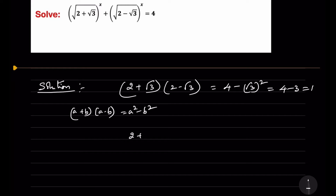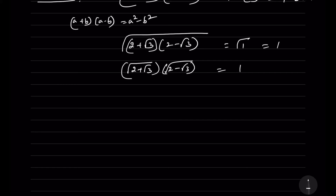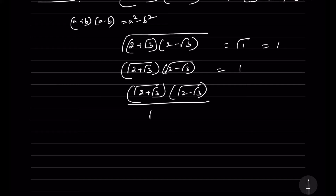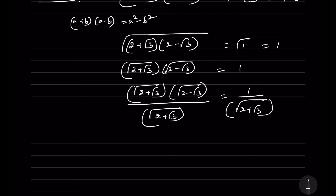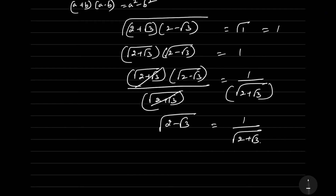That means √(2+√3) · √(2-√3) = 1. Dividing both sides by √(2+√3), we get √(2-√3) = 1/√(2+√3). We will take this as equation 1.